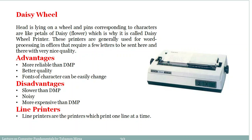The daisy wheel printer is also a character printer — it prints a single character at a time. The print head is on a wheel, and pins corresponding to characters are like petals of a daisy flower, which is why it is called a daisy wheel printer. These printers are generally used for word processing in offices requiring letters with very nice quality — better quality than dot matrix printers. They are more reliable but more expensive than dot matrix printers, and are also noisy because they are impact printers.